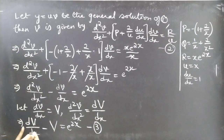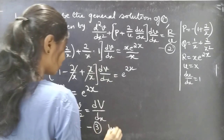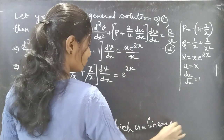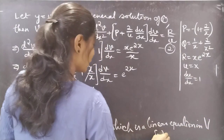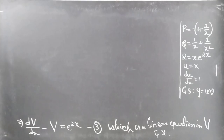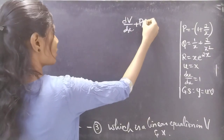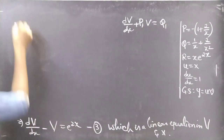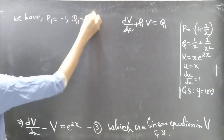We have reduced the given differential equation to a first order differential equation. This equation is linear in V and x. Now compare this linear equation with the general form of the linear equation: dV by dx plus P1 V equal to Q1, where P1 equal to minus 1 and Q1 equal to e power 2x.